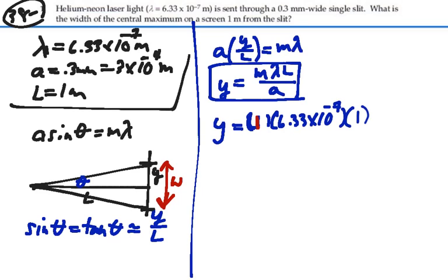Times the length of the screen, which is 1, over the slit width, which is 3 times 10 to the minus 4 meters. So this is equal to 2.11 times 10 to the minus 3 meters.